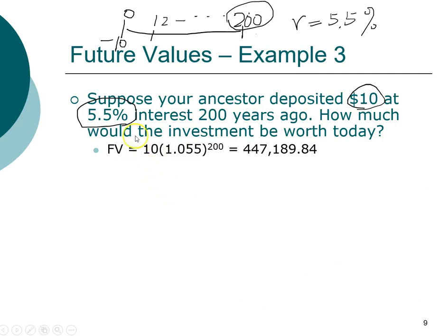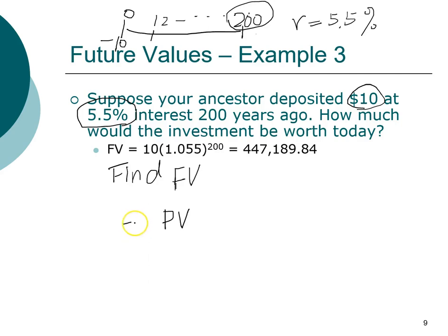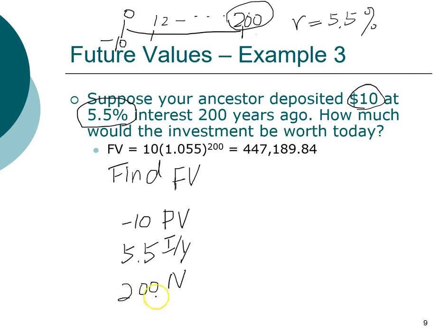In the financial calculator, you are solving for future value. First, define what you're looking for. To solve for FV, you need the other elements. The present value — remembering the inflow/outflow assumption — is negative ten dollars since we are investing (an outflow today). The interest rate register gets 5.5, entered as a percentage. We are investing for 200 years, so N equals 200.